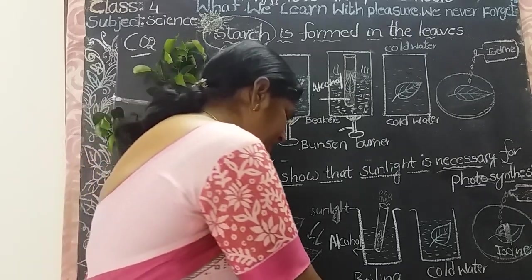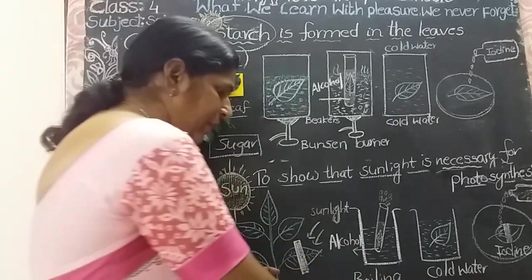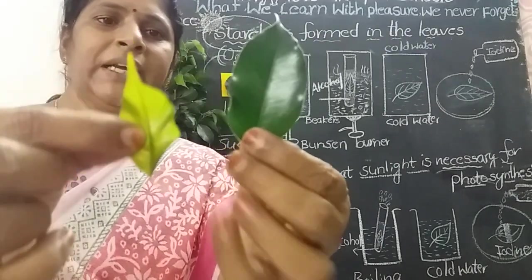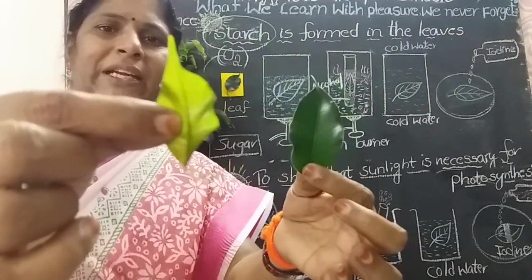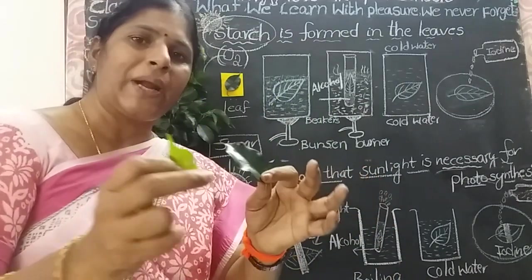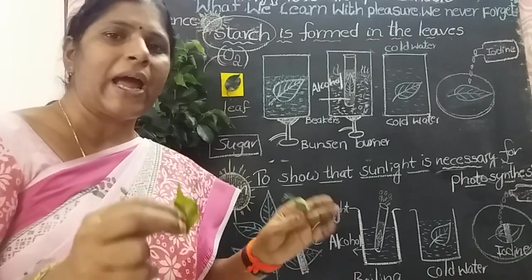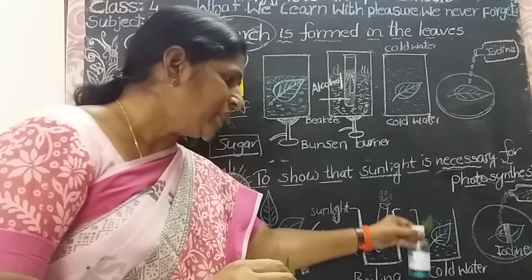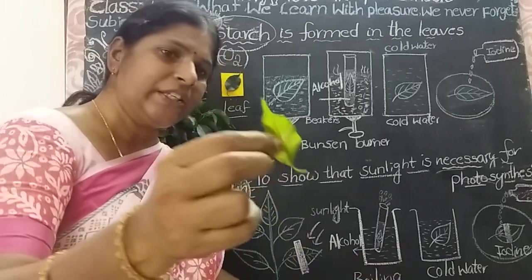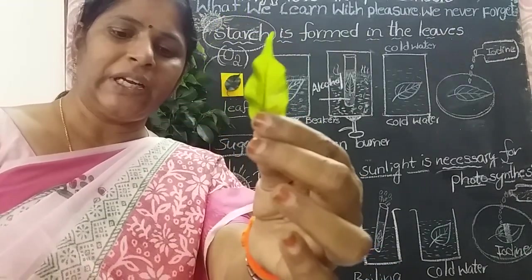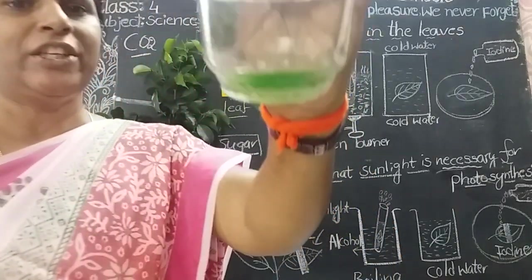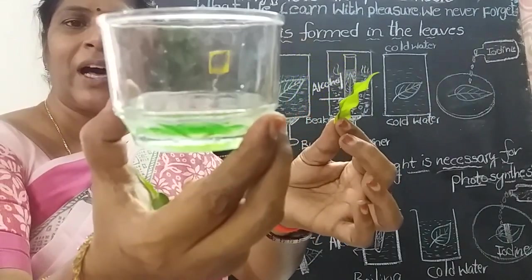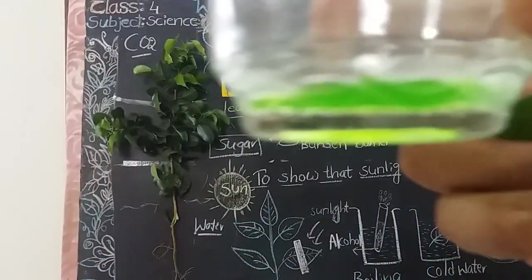I did this experiment this morning. I boiled the leaf — see the difference between this dark green leaf and this pale green leaf. I plucked two or three leaves, boiled them, added them to the alcohol solution. All the chlorophyll disappeared — the water changed into green, meaning chlorophyll dissolved in the alcohol solution.